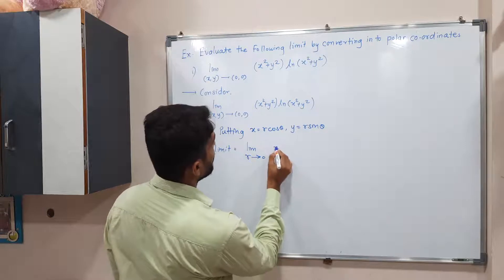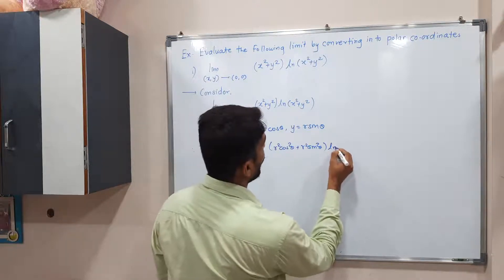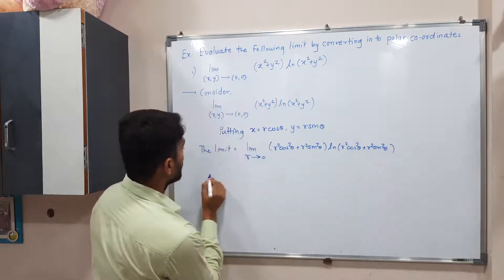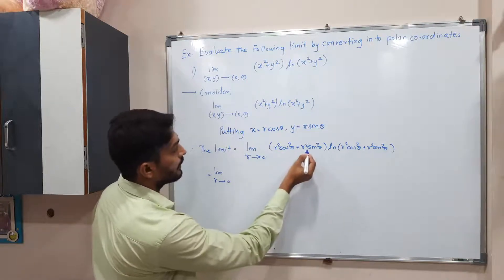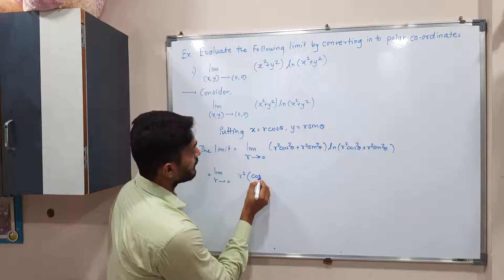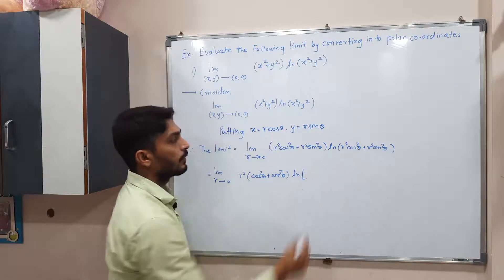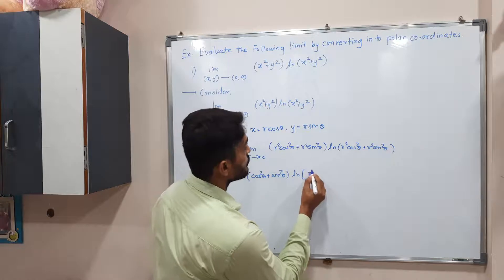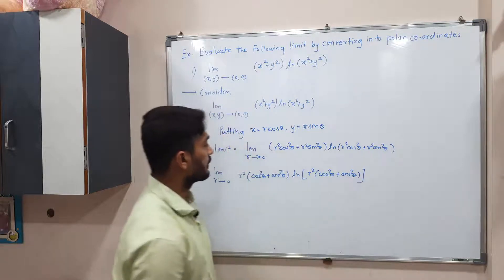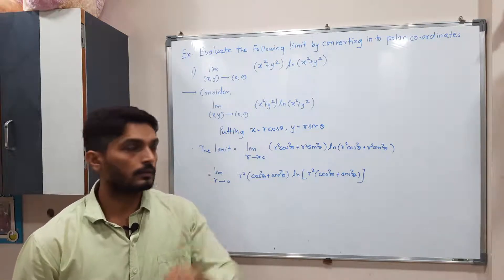Substituting, we get r² cos²θ + r² sin²θ, and inside the log we also get r² cos²θ + r² sin²θ. We can take r² common, leaving cos²θ + sin²θ in the bracket — and the same inside the log. Since cos²θ + sin²θ equals 1, both brackets simplify to 1.